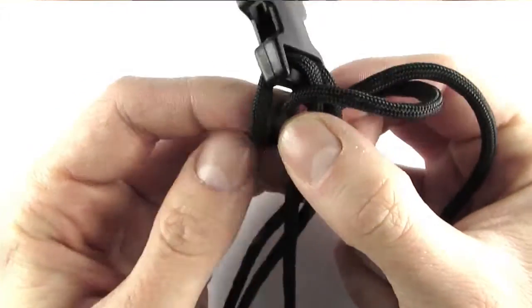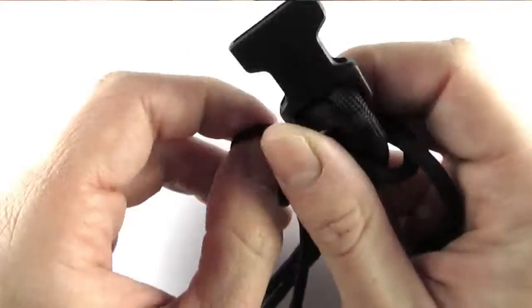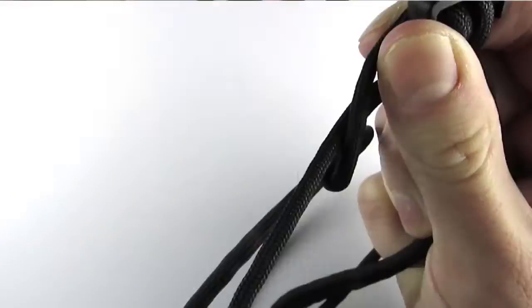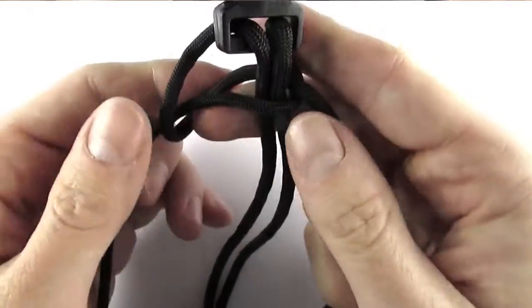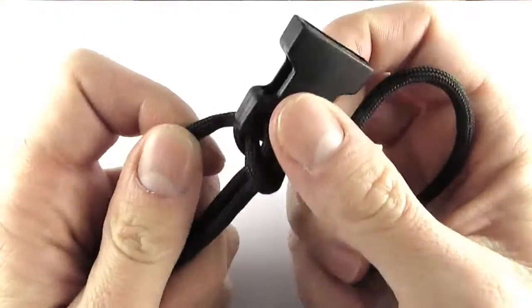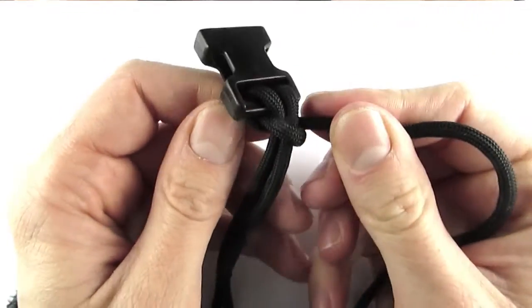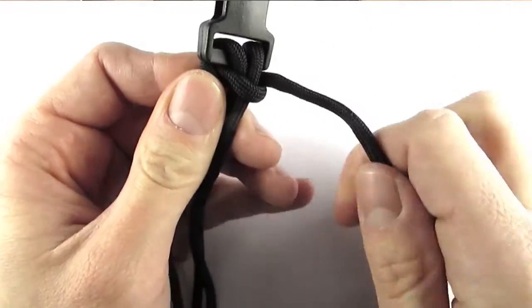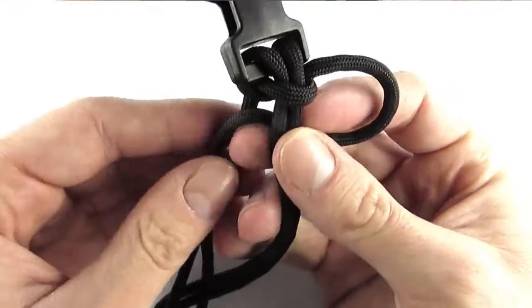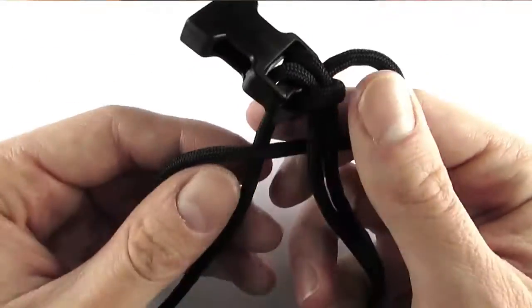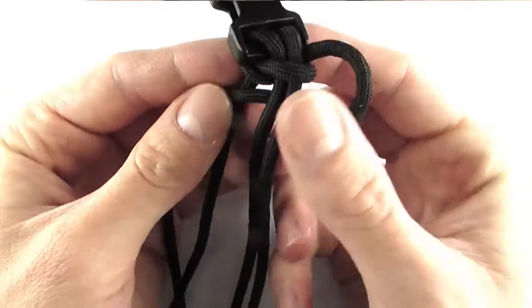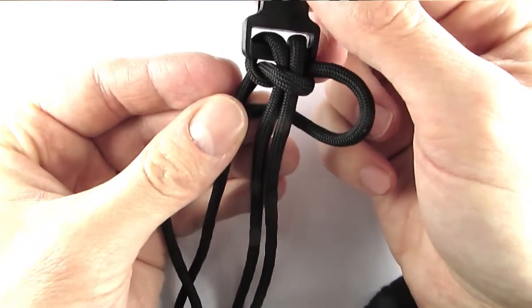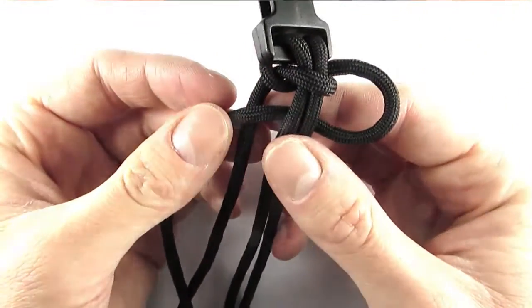The left loop, which will give us our first cobra knot like this. The second cobra knot is made to the right side by making a four shape like this to the right side, and then feeding the left cord.